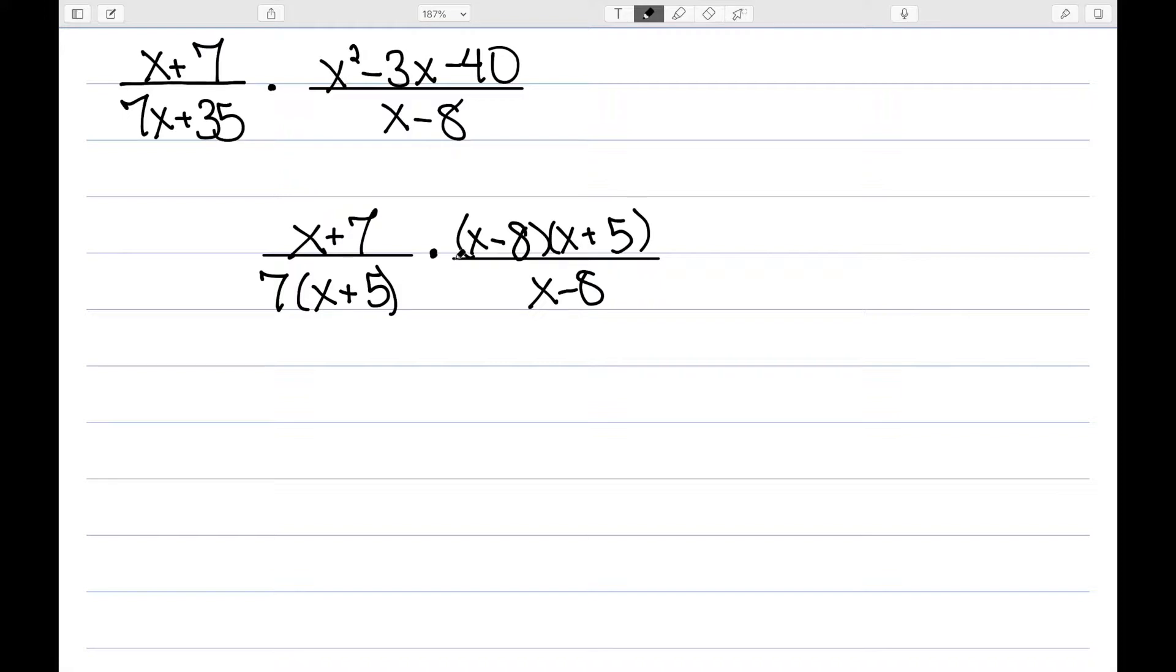I'm then going to go ahead and simplify. I have an x minus 8 on the top and the bottom. I also have an x plus 5 on the top and the bottom. On the top, I'm left with an x plus 7, and on the bottom, I'm just left with a 7. And now this is as simple as possible.